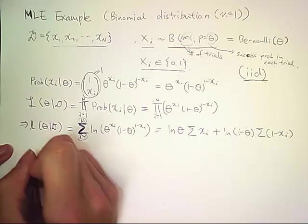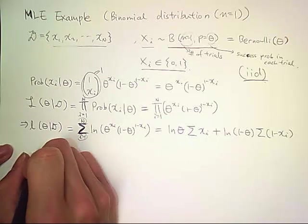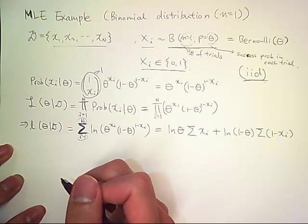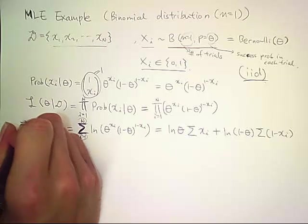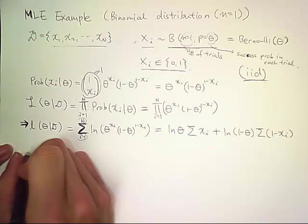Now we should take the gradient of this log-likelihood function and set it to zero. And that's how you get the extremum of a function analytically.